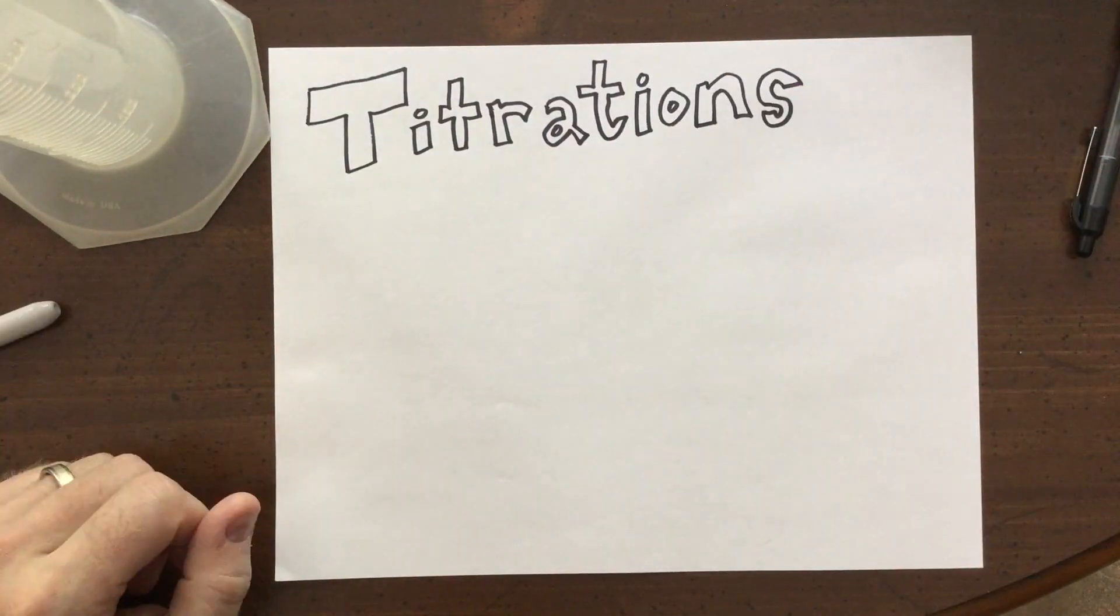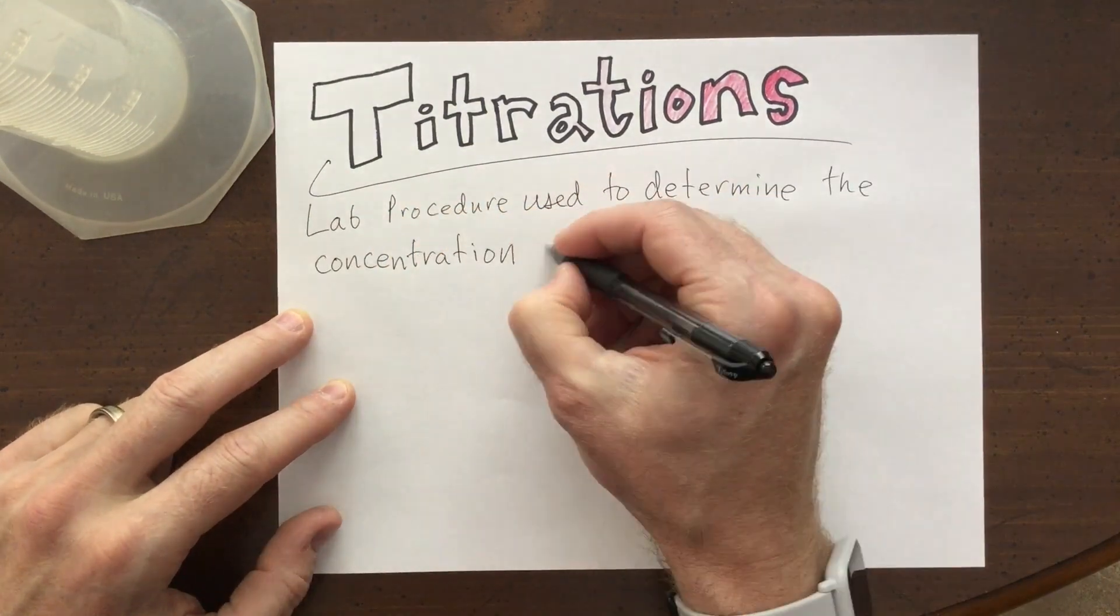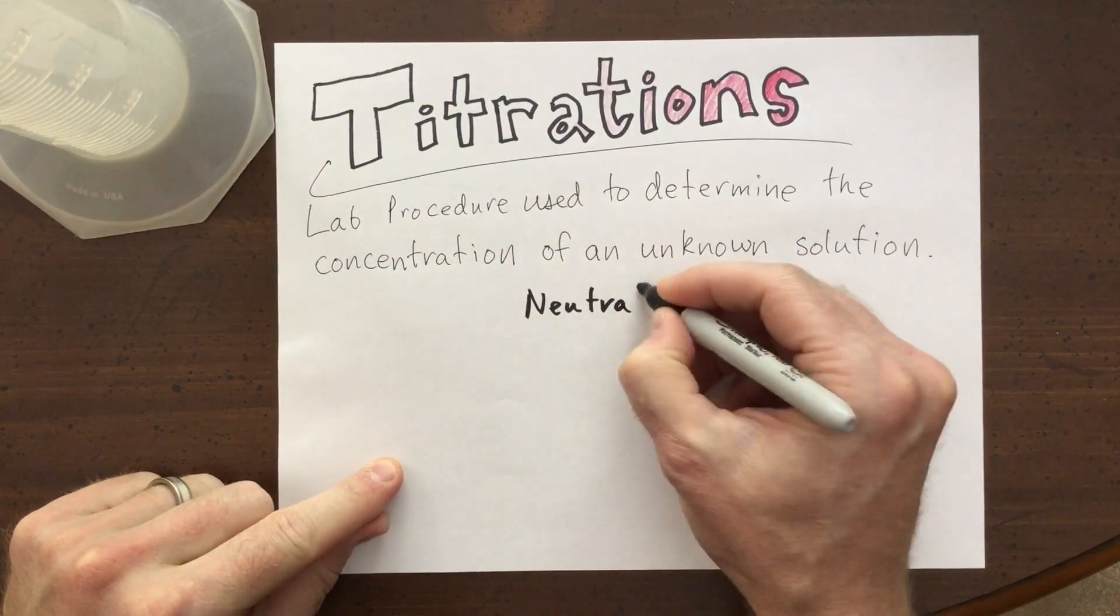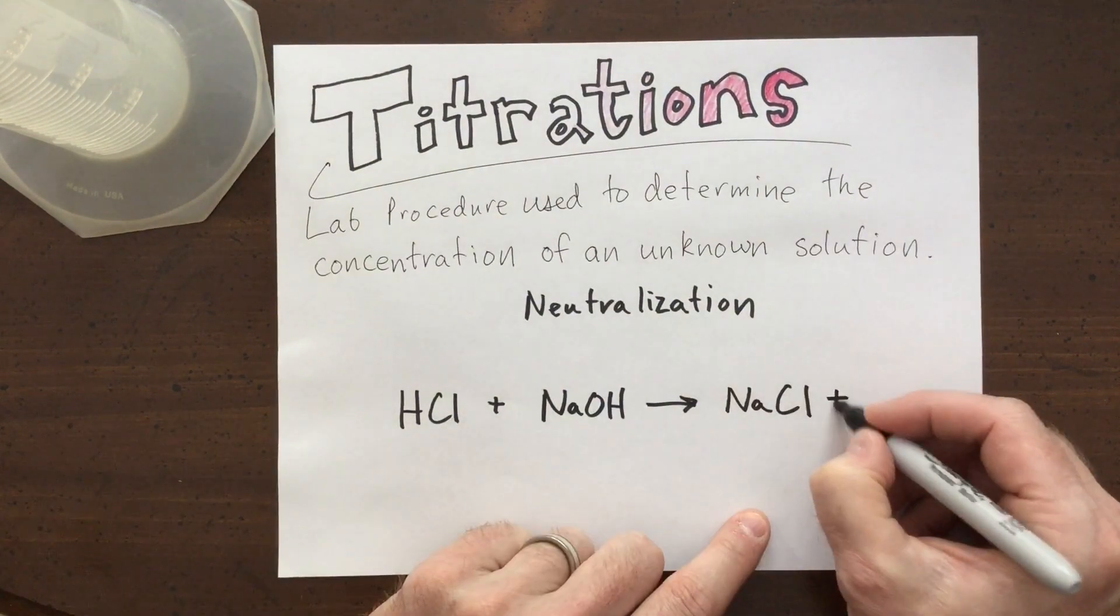Hello, chemistry folks. We are going to learn about titrations. This is a lab procedure used to determine the concentration of an unknown solution. We will do ours using a neutralization reaction between hydrochloric acid and sodium hydroxide, producing sodium chloride and water.